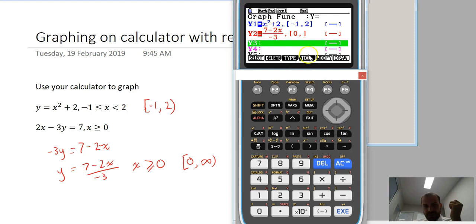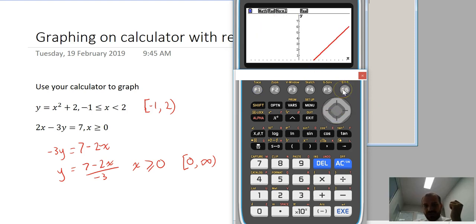Now at the moment it's drawing both. So I'll just go back up here and deselect this one. So now it's only drawing the one with the highlighted equal sign. Click draw.